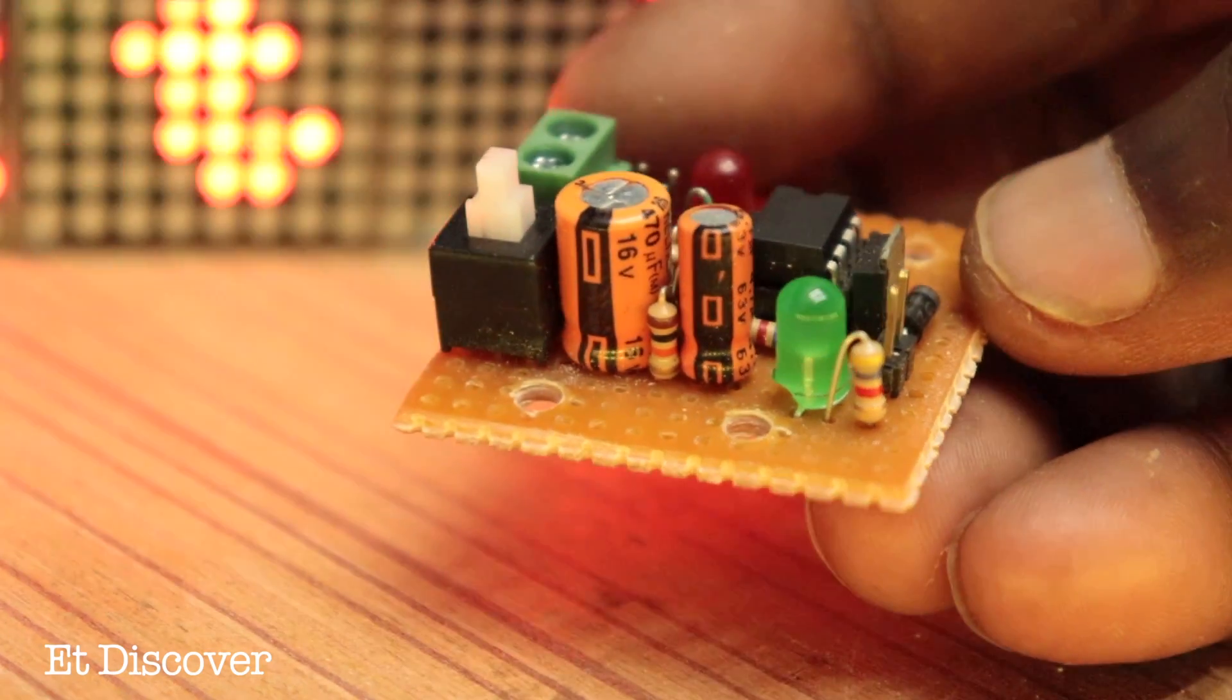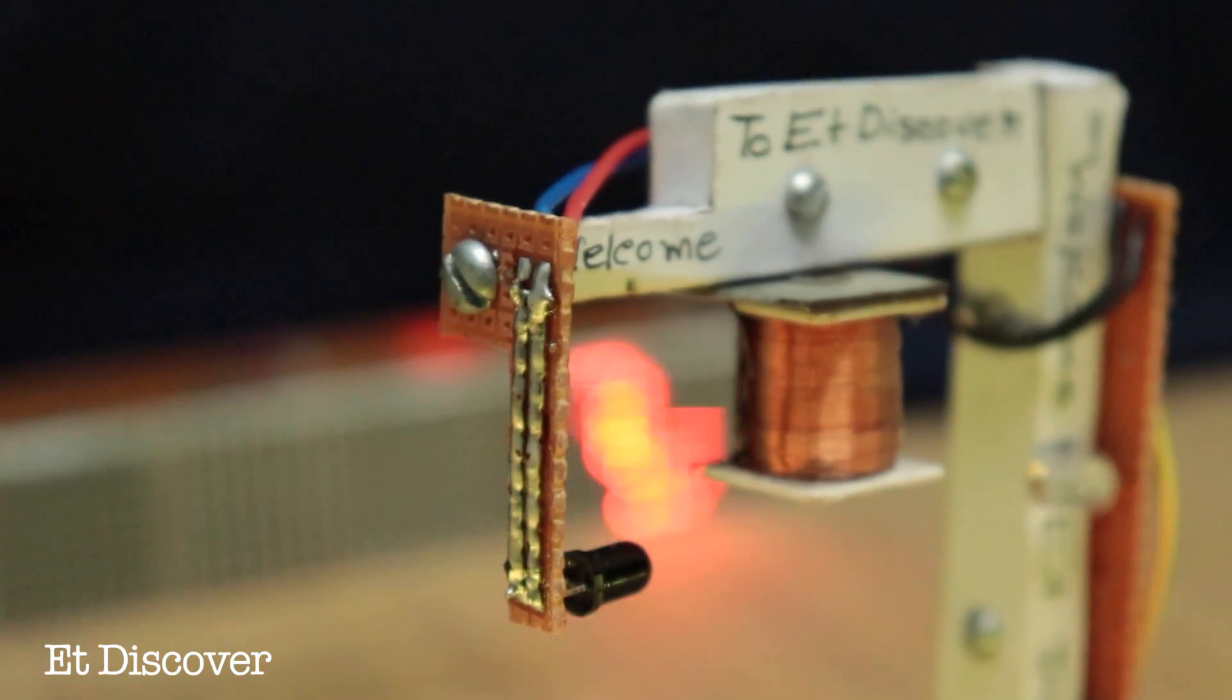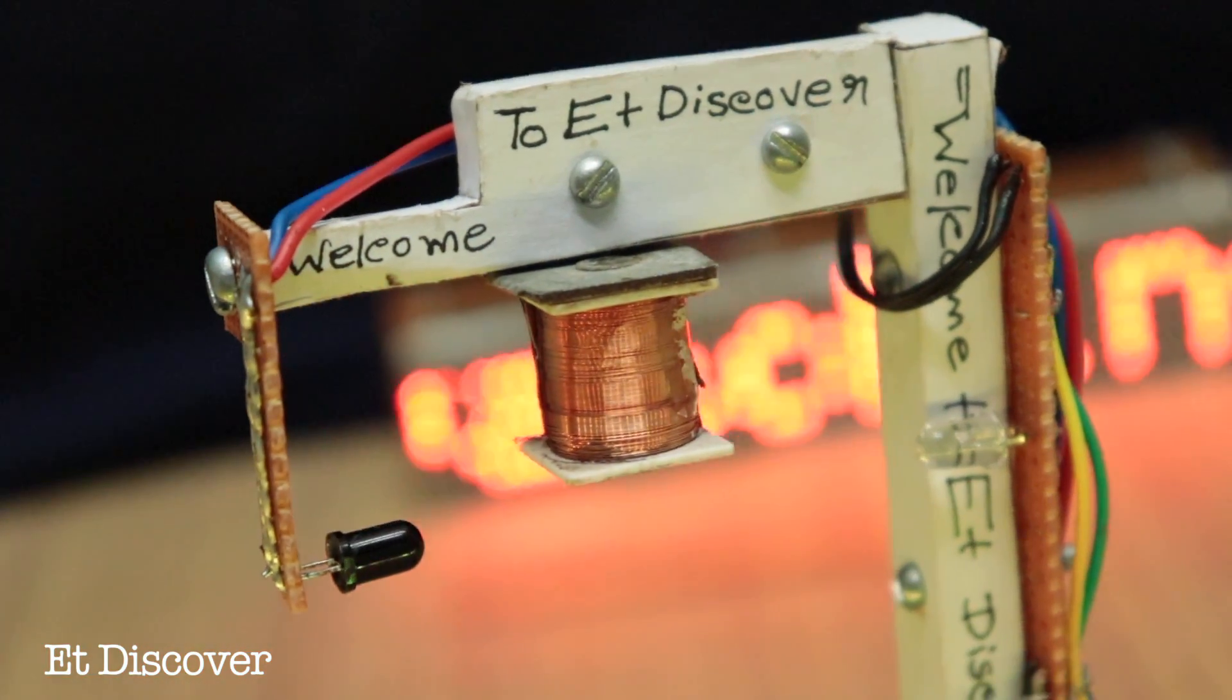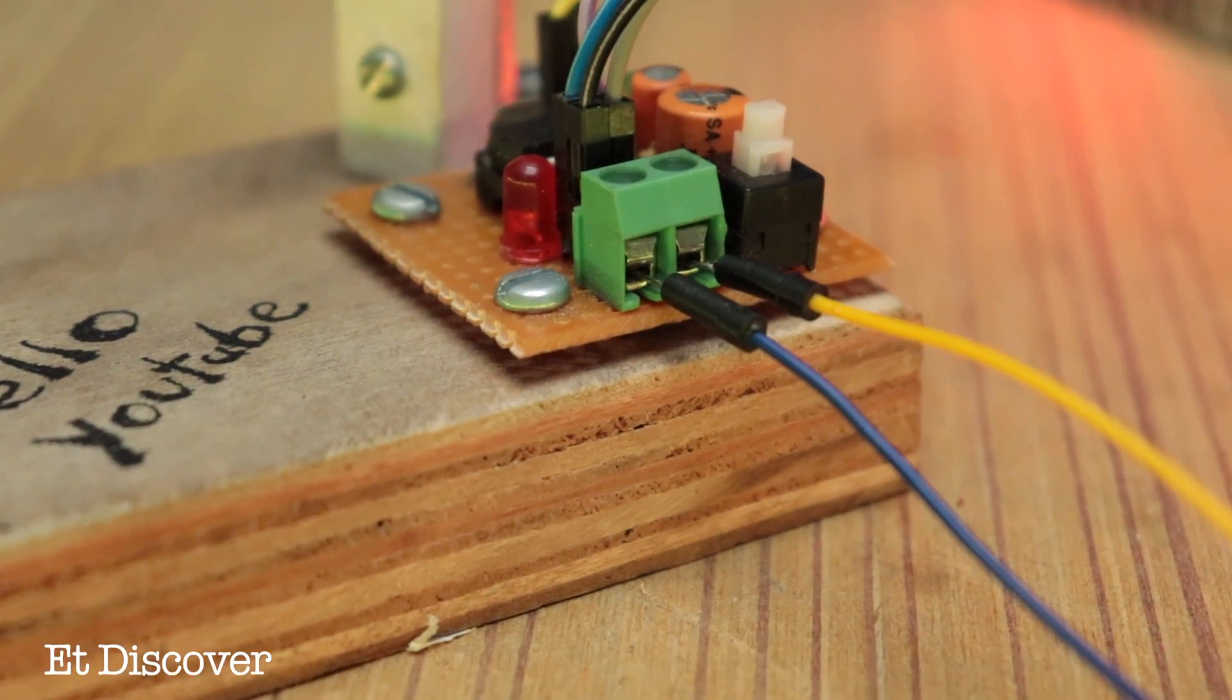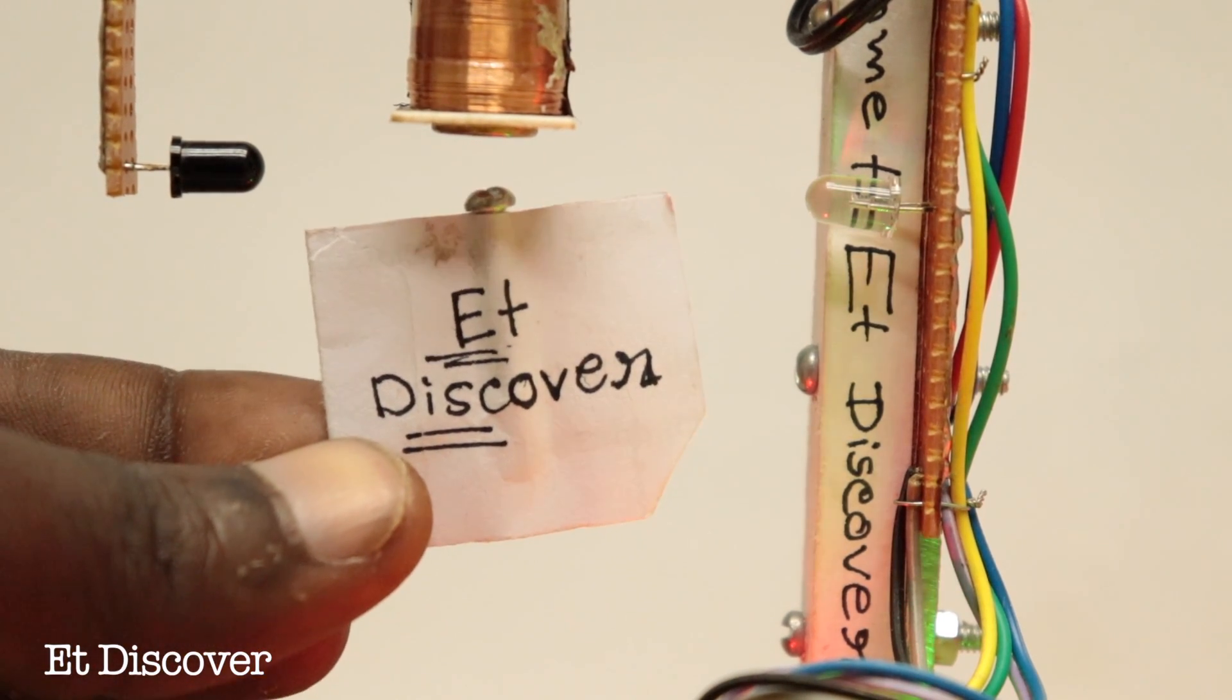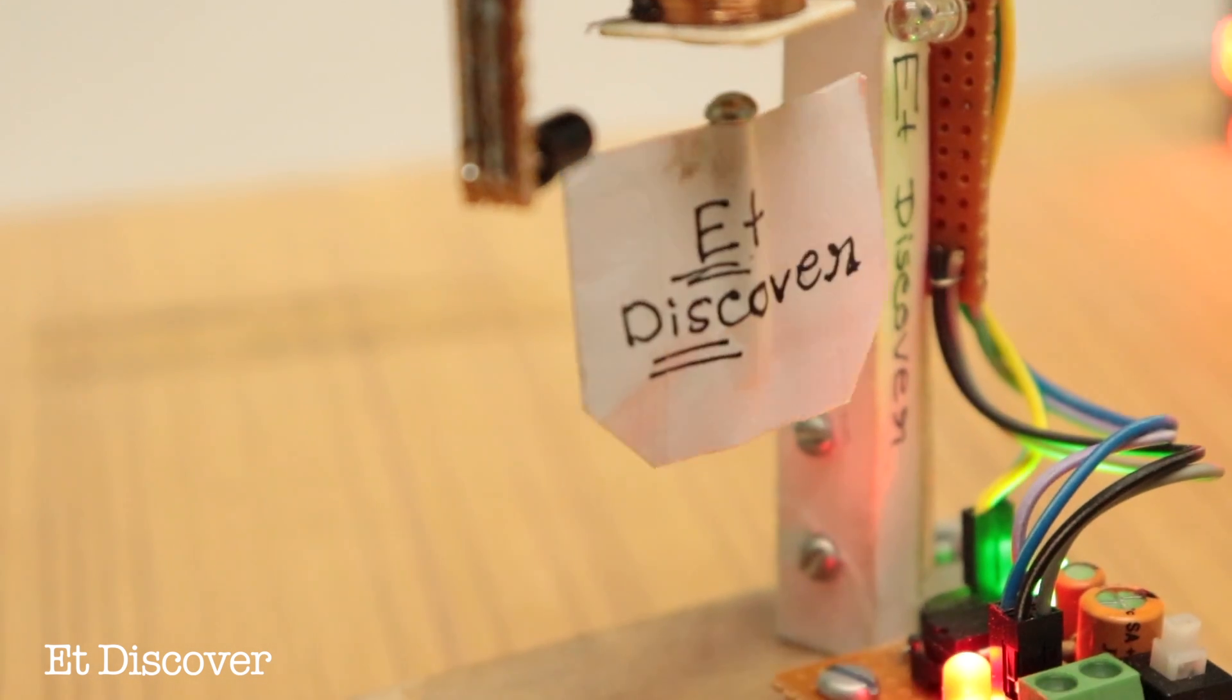So I made the same circuit on a PCB board and added an on-off switch and some lights. I also made a nice frame for this, which will look nice and will last long, and where I fixed the sensor permanently. I also fixed a coil permanently which takes very low current and can run for a long time without heating. I attached this circuit board on this wooden block. After completing all the procedures, it's looking very nice. If you like this video, make sure to give it a thumbs up. And to see more videos like this, subscribe to my channel and stay tuned.